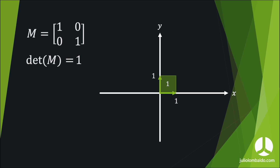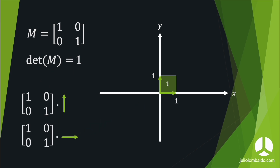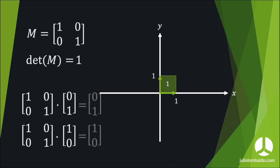The relationship between this determinant and the square area is simple: the two column vectors inside the matrix are the same vectors that form the square. When you take the product between the matrix and each of the two vectors, you get resulting vectors that are very similar.